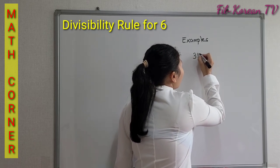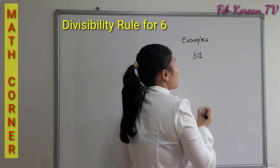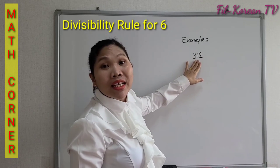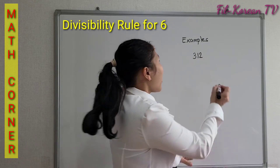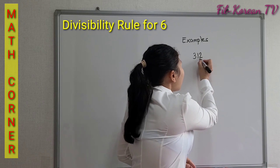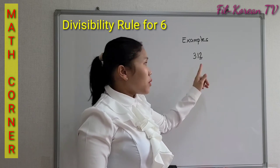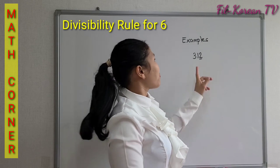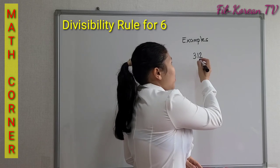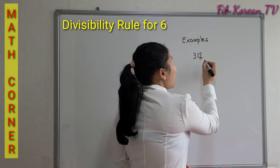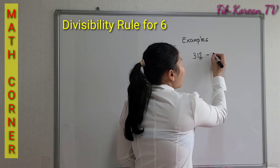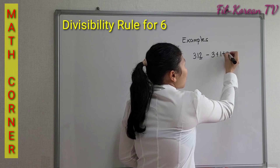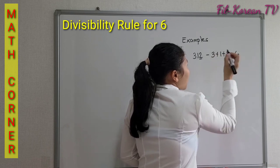312. The number 312 is an even number — it ends in 2, meaning it is divisible by 2. If we add 3 plus 1 plus 2, the answer is 6.